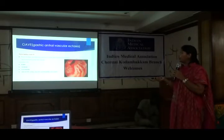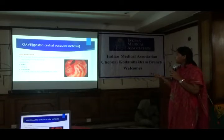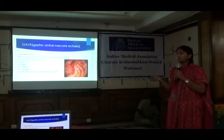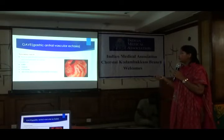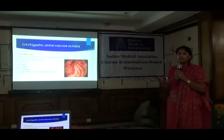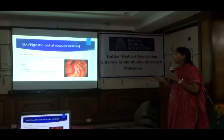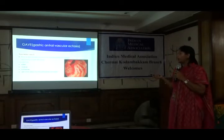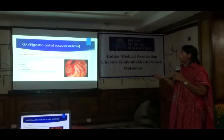Gastric antral vascular ectasia presents as a watermelon stomach and is associated with end-stage renal disease, cirrhosis, scleroderma, and connective tissue diseases. We only intervene if it bleeds; otherwise no intervention is needed. APC or argon plasma radiation therapy is usually effective in these cases.